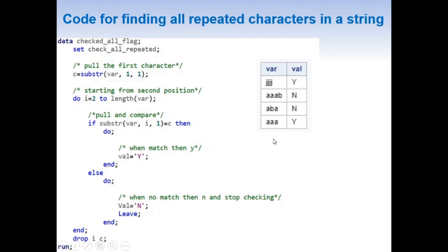The same logic is applied to all other rows. A value of Y in the new column indicates that all characters are repeated, and N indicates they are not. Two important points before concluding: first, I may have used 'rows' and 'observations' interchangeably — both mean the same thing. Second and most importantly, it is always important to build a strategy before solving any problem, because once a strategy is developed, it becomes much easier to solve any kind of problem.